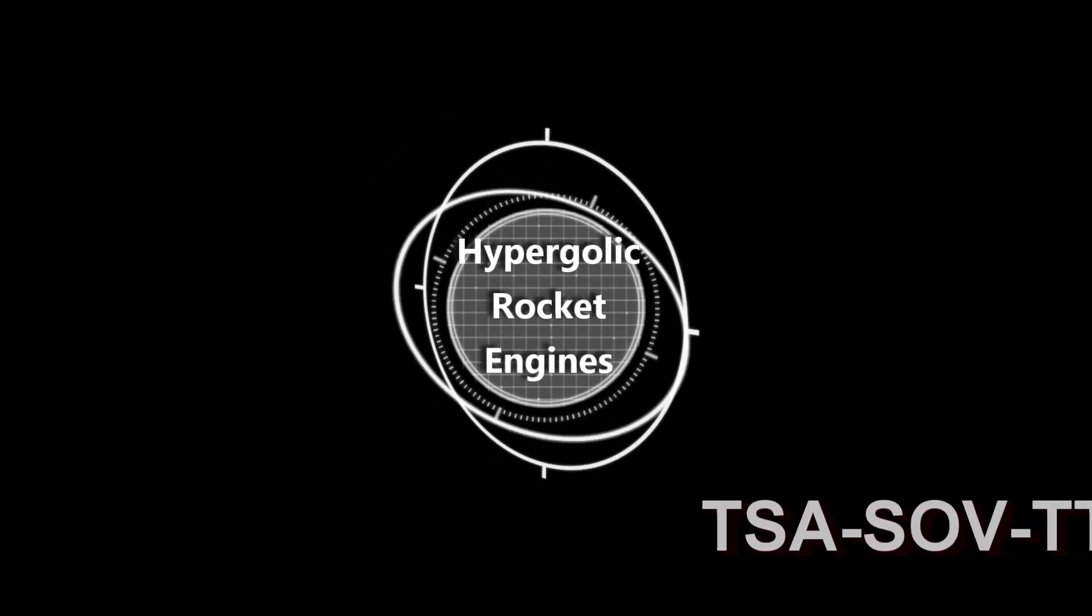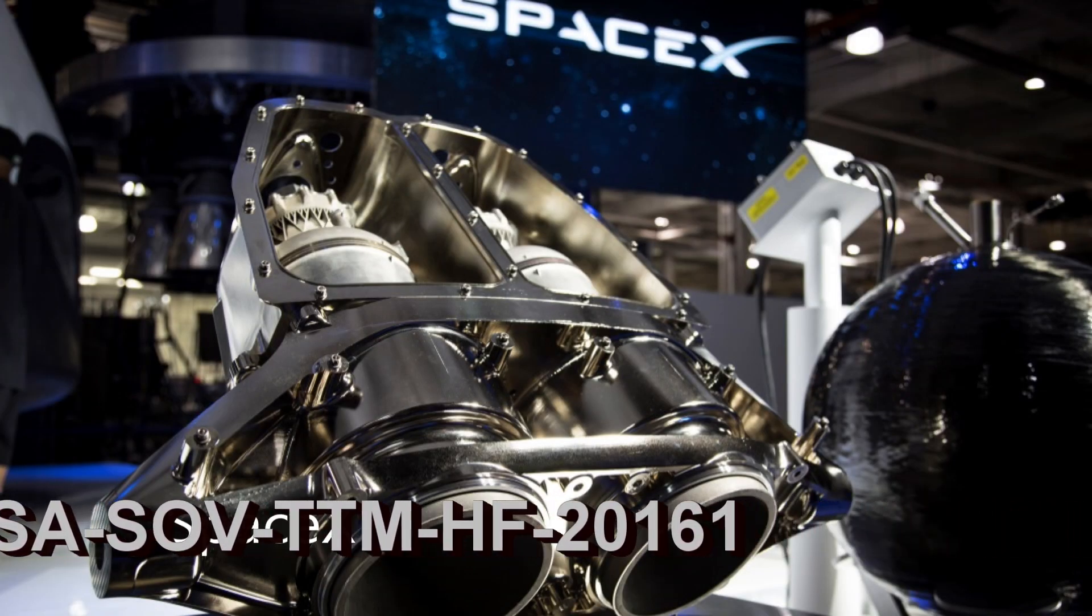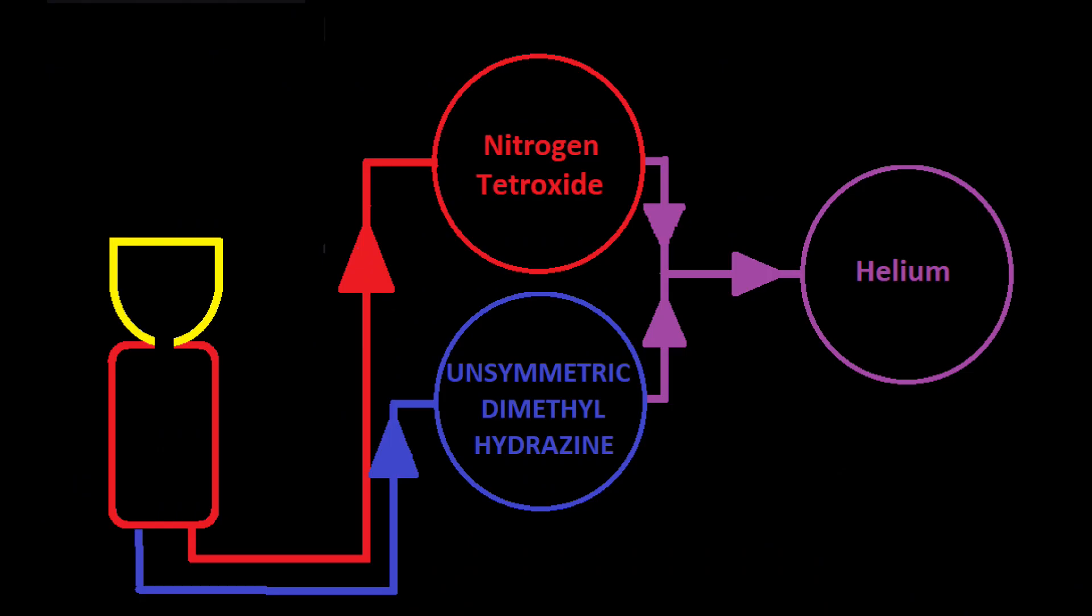Understanding the SpaceX Draco and Super Draco engines and hypergolic fuels. Propulsion in space can be as simple as mixing two liquids together. You don't have to do anything else. All you need are two pressurized tanks, a combustion chamber, and a nozzle. One tank contains a hypergolic fuel like unsymmetric dimethylhydrazine and a hypergolic oxidizer like dinitrogen tetroxide, usually called nitrogen tetroxide or NTO.